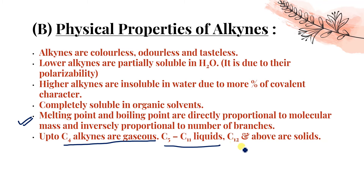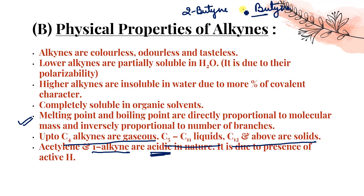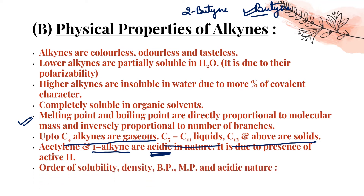C5 to C11 alkynes are liquid; C12 and above are solid. Acetylene and terminal alkynes (1-alkynes) are acidic in nature — they easily give H⁺ ions due to the presence of an active hydrogen. For example, between 2-butyne and 1-butyne, 1-butyne is more acidic because the triple bond is at the first carbon and the acidic hydrogen is present there.